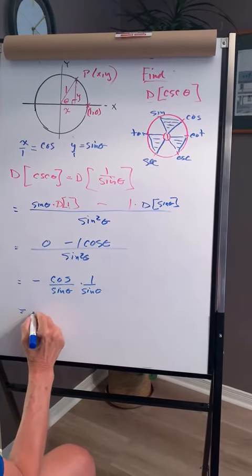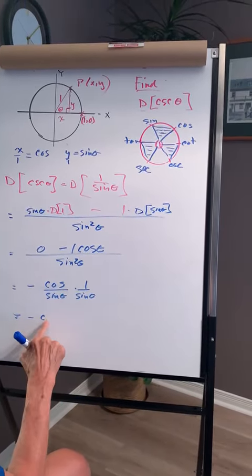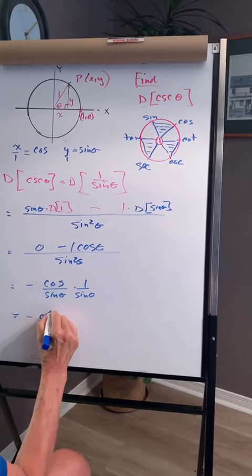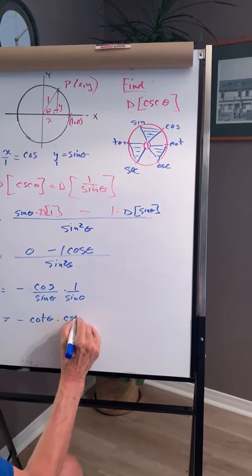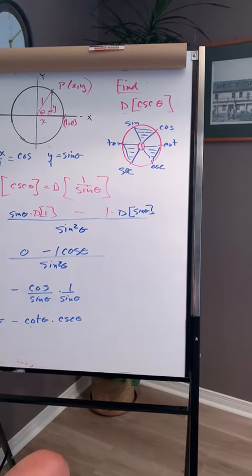Minus cos over sine is minus cotangent theta, and 1 over sine is cosec theta. Therefore,